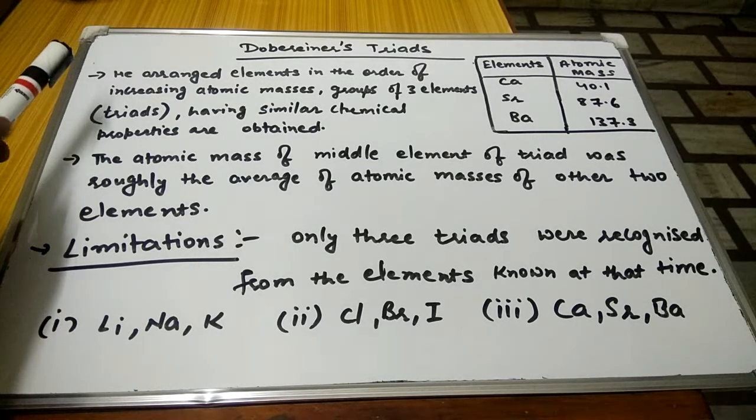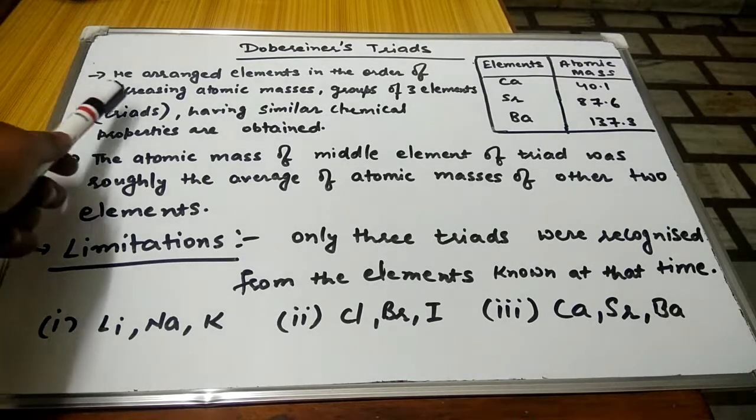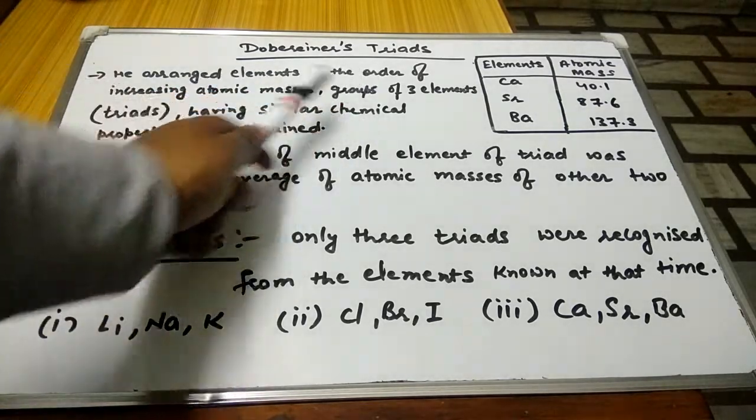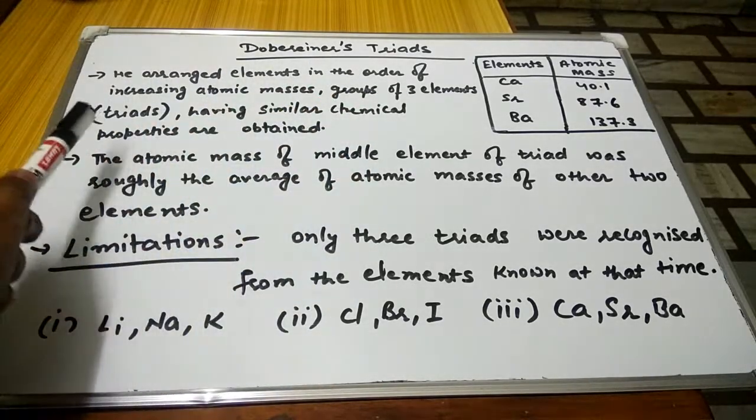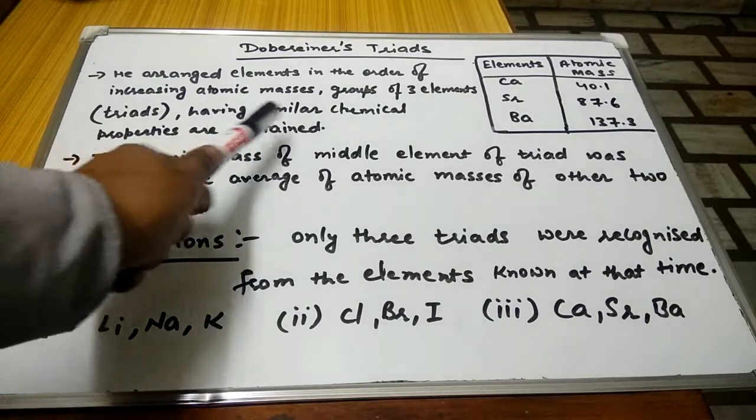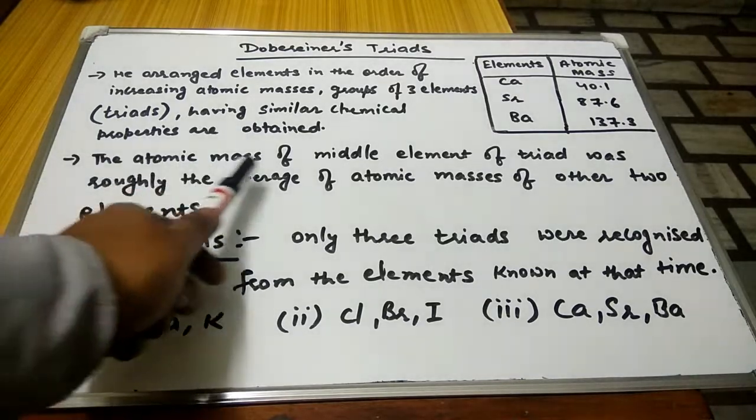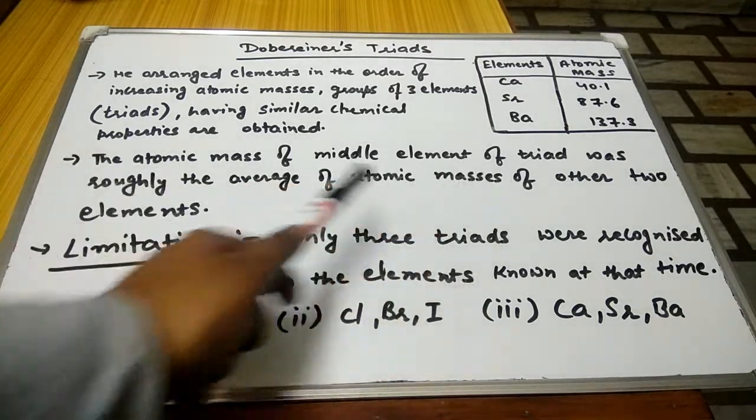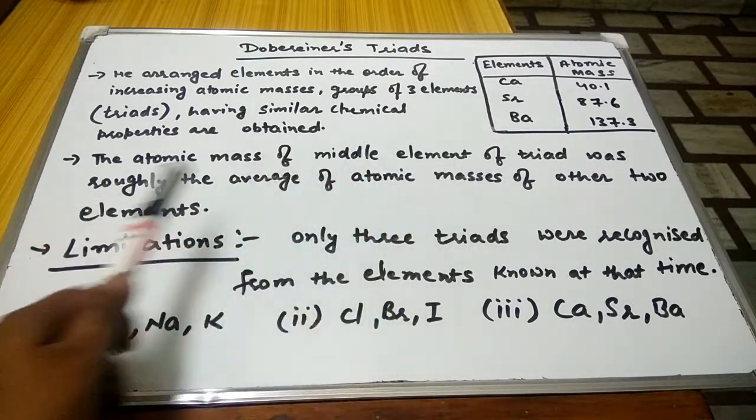So let us see what Dobereiner's Triads is trying to explain. He arranged elements in the order of increasing atomic masses. Groups of three elements, known as triads, having similar chemical properties are obtained. The atomic mass of the middle element of a triad was roughly the average of atomic masses of the other two elements.